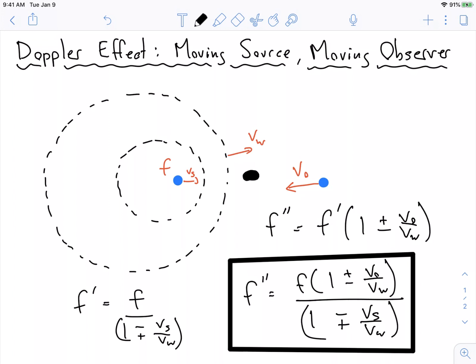So you pick the sign that gives you the higher frequency here, a number that's smaller than one. And if it's moving towards, you try to make the number, pick this plus sign that makes that number be bigger.